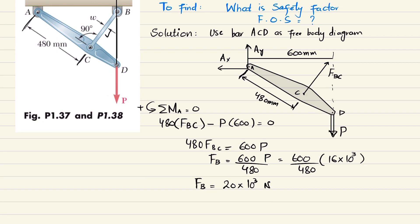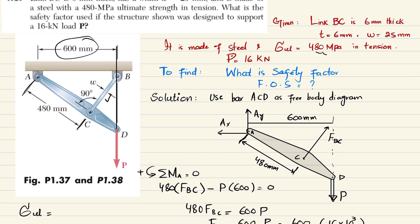Now you have the force in this member BC. We have been given ultimate tensile stress equals 480 megapascal in tension.